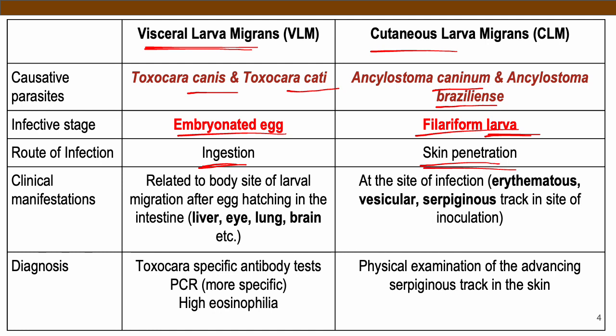In terms of clinical manifestations, since visceral refers to the soft organs of our body, these parasites attack the liver, the eye, the lung, the brain, and all the soft tissues or soft organs of our body.